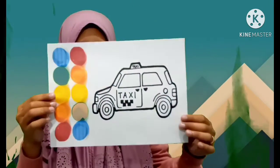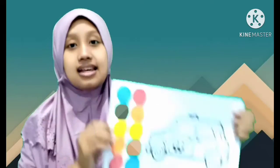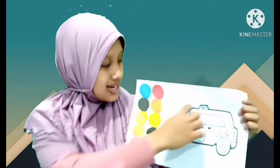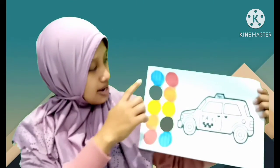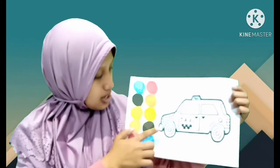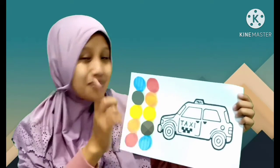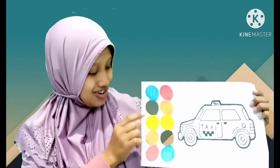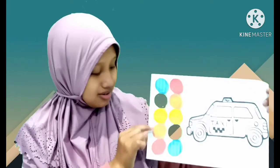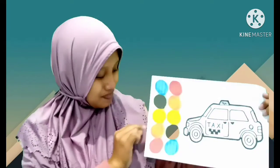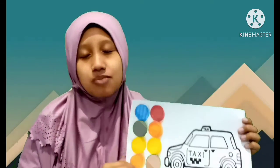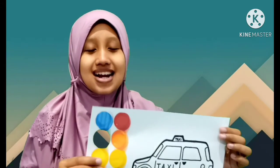Bu Ana punya lagi gambarnya. Nanti anak-anak setelah mengerjakan yang ada angkanya, boleh melanjutkan untuk mewarnainya. Ini mobil taksi. Boleh nanti dikasih warna biru, hijau, yellow — yellow bahasa Indonesia kuning — orange, merah. Sudah itu, boleh lagi diwarnai dengan warna yang lain.